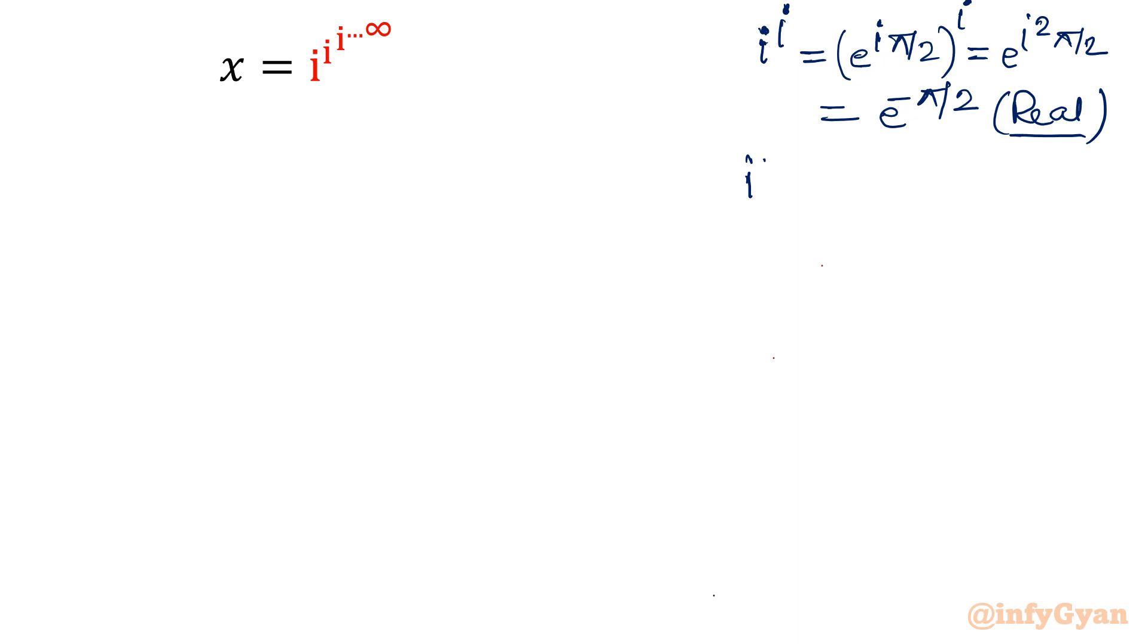Now, second point: i power i power i. If you will check, e raised to the power minus pi over 2, power i. That value will be e raised to the power minus i pi over 2, which equals cos pi by 2 minus i sine pi by 2. So, minus i. Now you can see this value is imaginary.